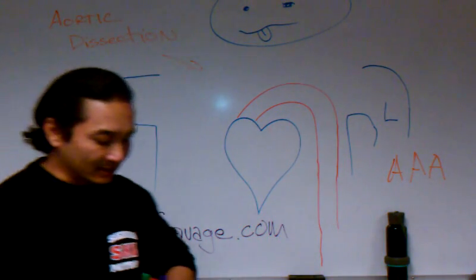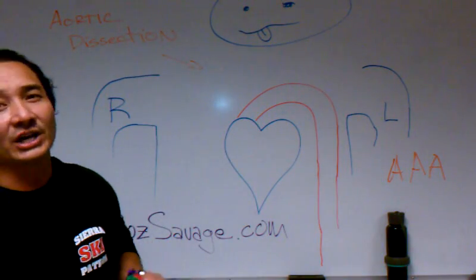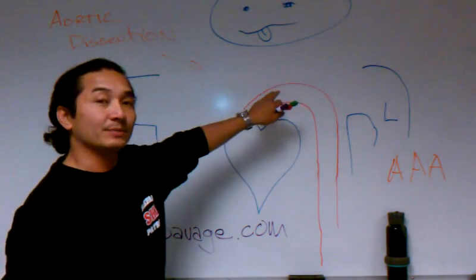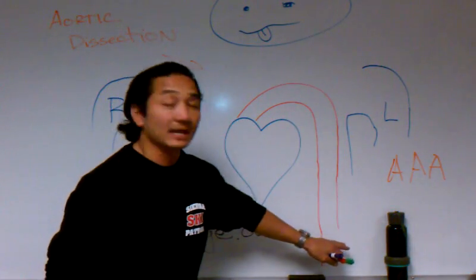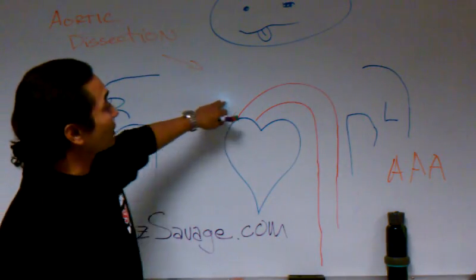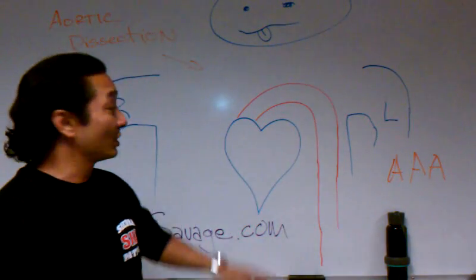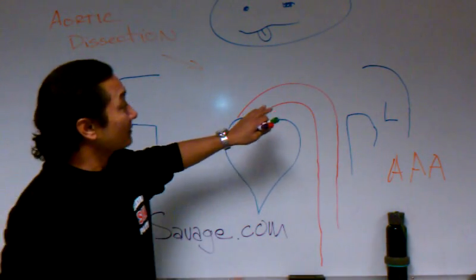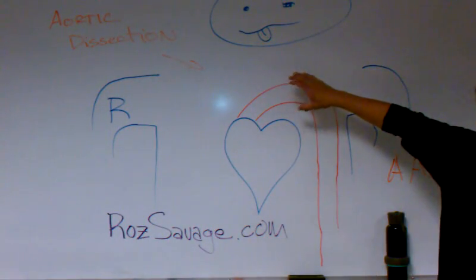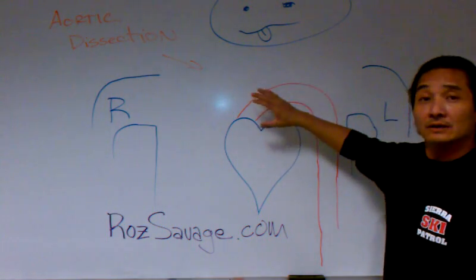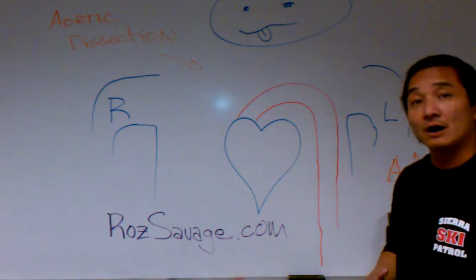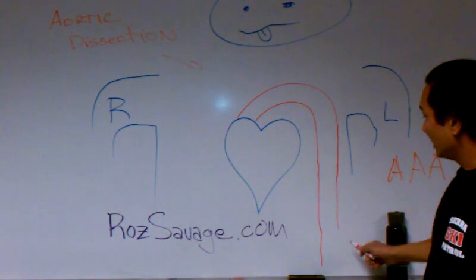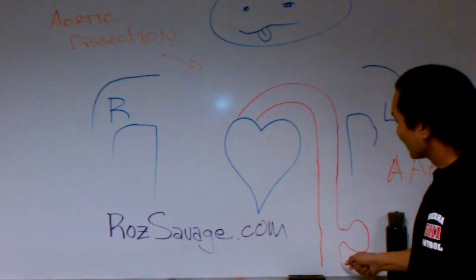This is the reason why the aortic dissection, unless it's a congenital defect, happens up here, and an abdominal aortic aneurysm happens down here. The dissection happens up here because the clavicles, the ribcage, the heart, and the lungs all press down on the aorta, so the aorta stays in its shape. Down here in the abdomen, there's no pressure on it whatsoever, and so what you have is a little ballooning out in the abdomen.